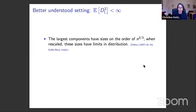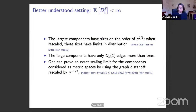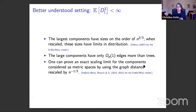The large components are close to being trees — they have only order one more edges than a tree would have. One can prove an exact scaling limit for the components viewed as metric spaces, with graph distance and distances rescaled by n to the minus one-third. This was done in joint work with Addario-Berry and Broutin around 2010 for Erdős–Rényi, and subsequently by many authors for various other models. The scaling limit of a large component looks like a well-behaved fractal object with bounded vertex degrees, quite tame compared to what we expect in the heavy-tailed setting.